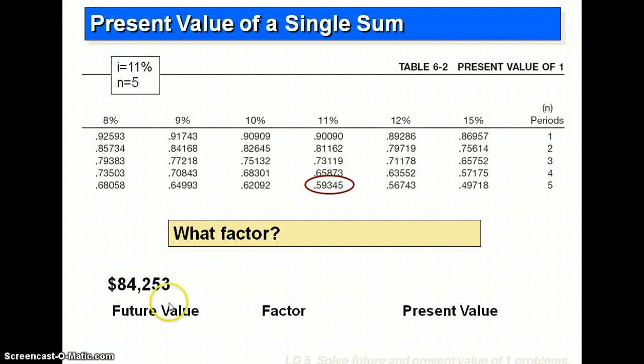So if we take the future value, 84253, multiply that by .59345, we arrive at the present value of $50,000. So that future value five years from now is worth $50,000 in today's money. That's the table approach.